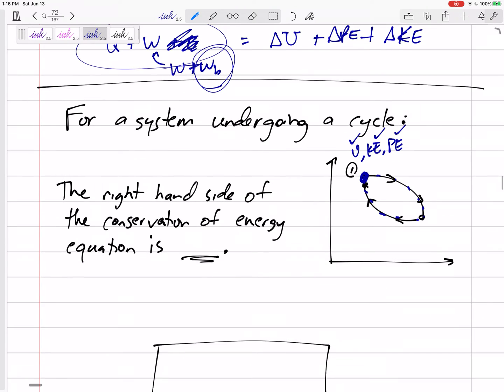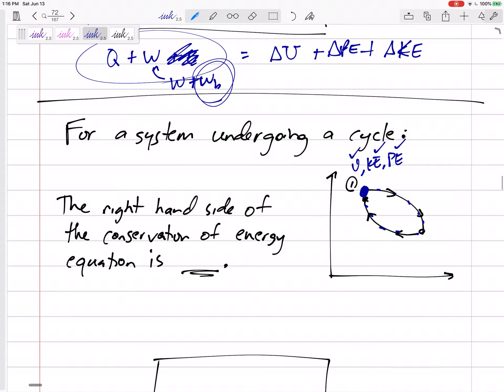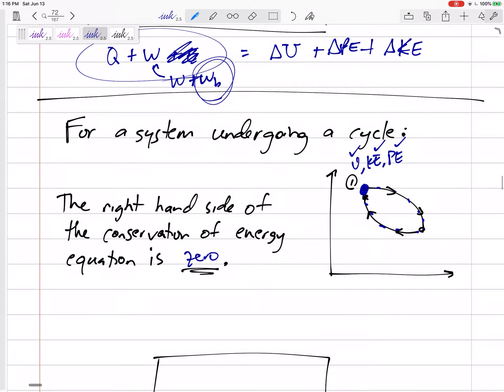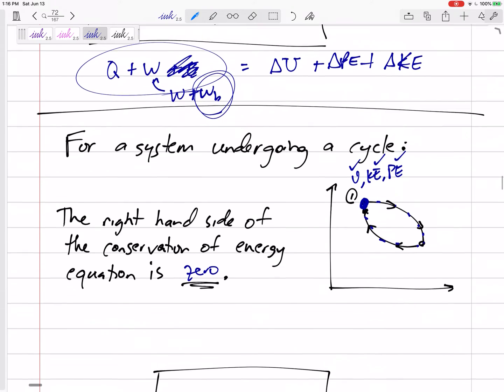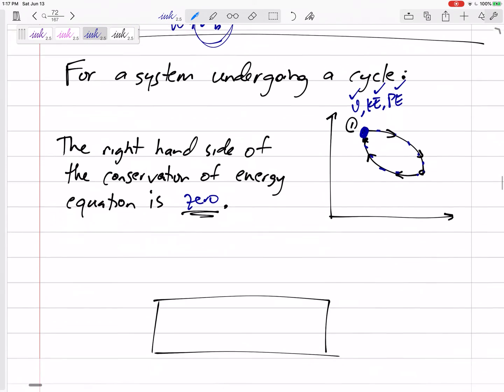...then that means it comes back to the same properties that it was at. And so the right-hand side of our equation right here is zero. For a system undergoing a cycle, then whatever energies it started with and ending with, it ends, or whatever energies it started with, it ends with those same energies. So the right-hand side of our equation is zero.